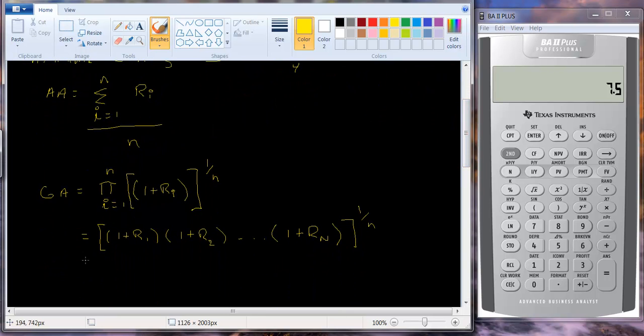So we're going to have 10%, so we're going to have 1.10. And then it's going to have 1 plus minus 0.03. So I'll write that out, 1 plus negative 0.03, which is going to be 0.97.